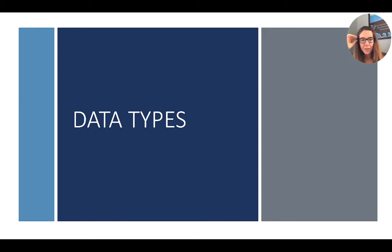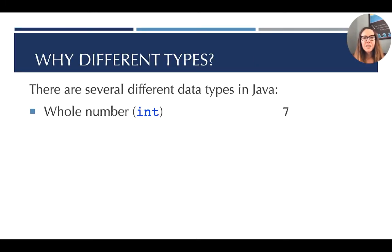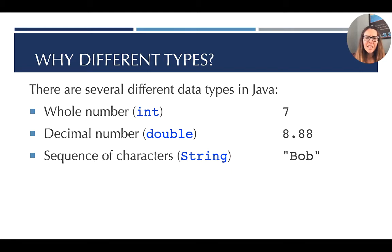So let's take a look at a few data types. There are several different data types in Java. Whole numbers, which we refer to as ints or integers, like the numbers 1, 2, 3, 4, 5, 6, 7, all of our counting numbers are ints. Decimal numbers, which could be floats and doubles, referred to as double as you see here, 8.88. A sequence of characters, which the computer knows as strings, and you'll note that string is capitalized.